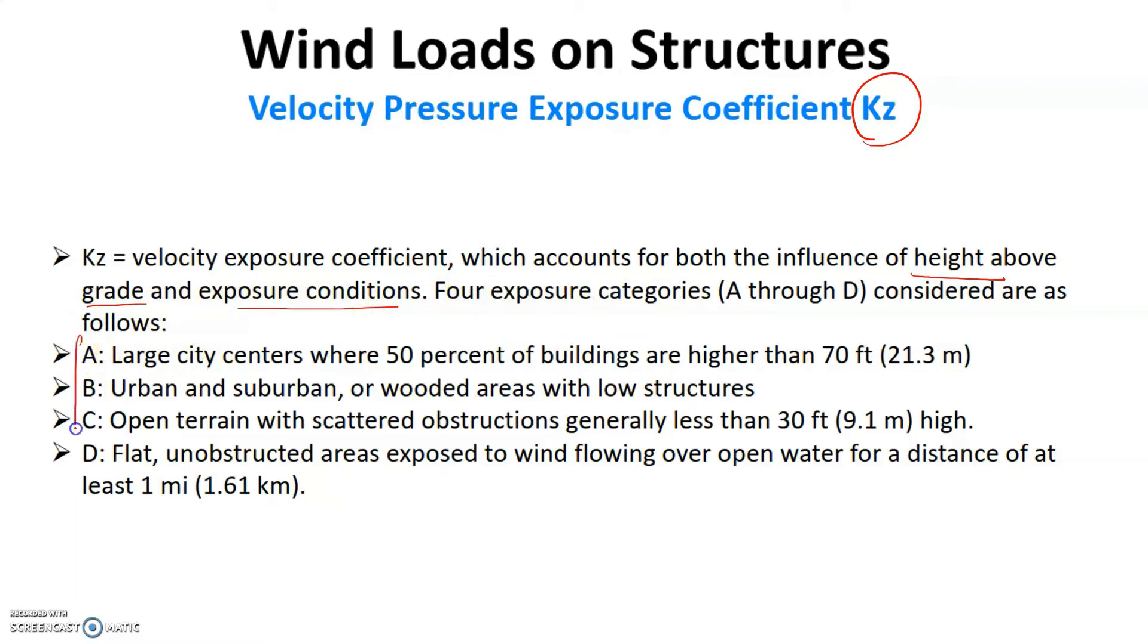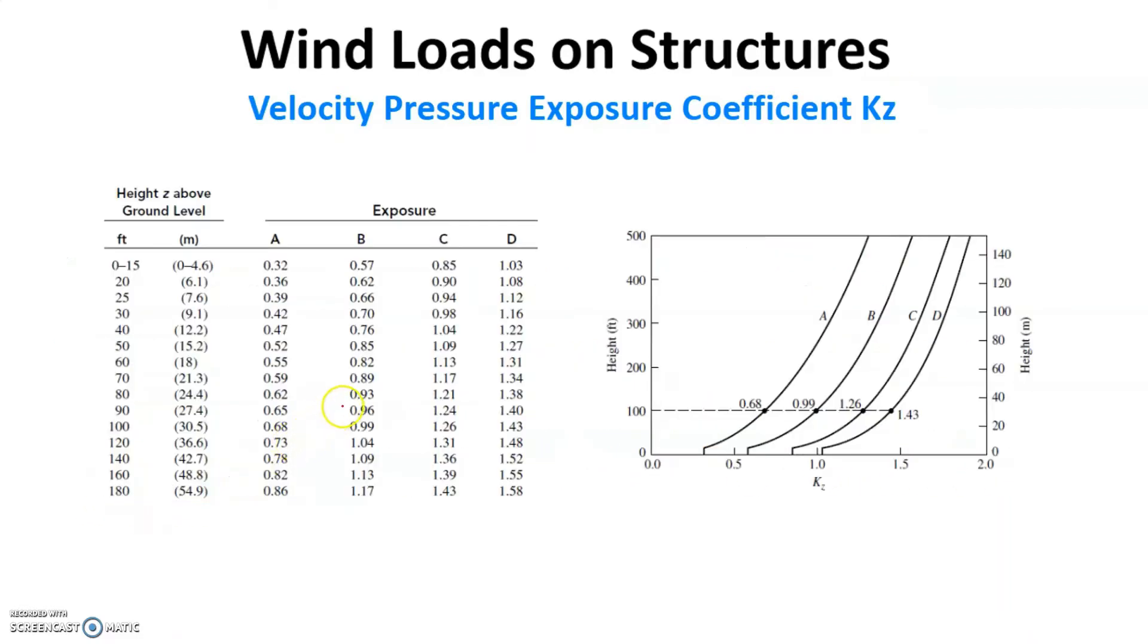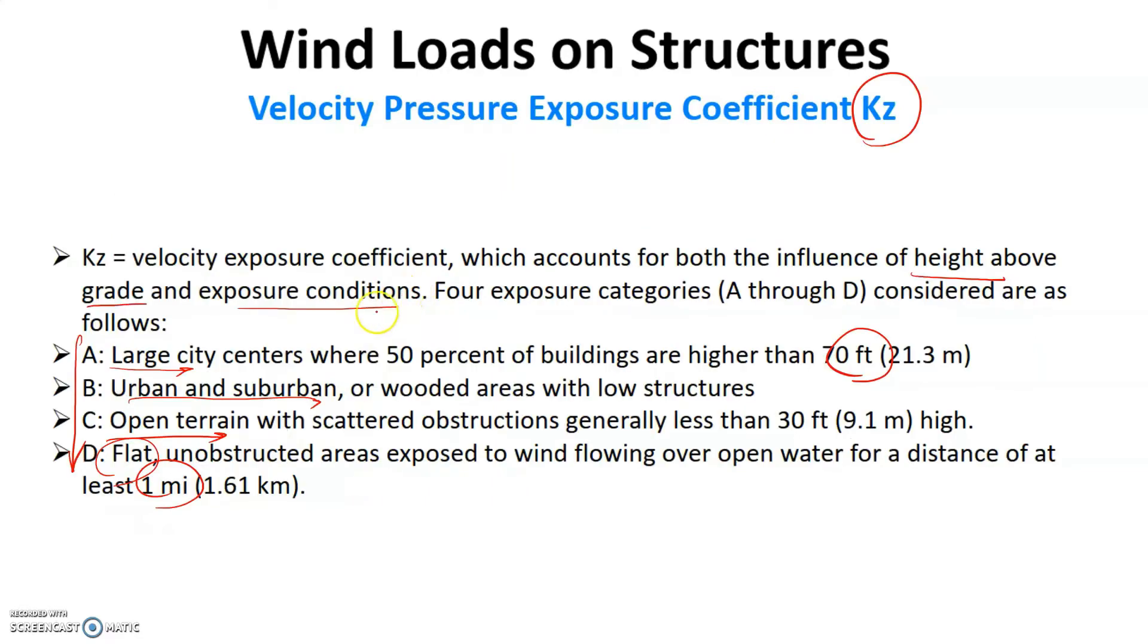KZ accounts for the influence of height above the grade and exposure conditions. This varies from A to D, where A is large city centers where 50% of buildings are higher than 70 feet, B is urban and suburban settlements, C is open terrain, and D is flat unobstructed areas exposed to wind flowing over open water for a distance of at least one mile.